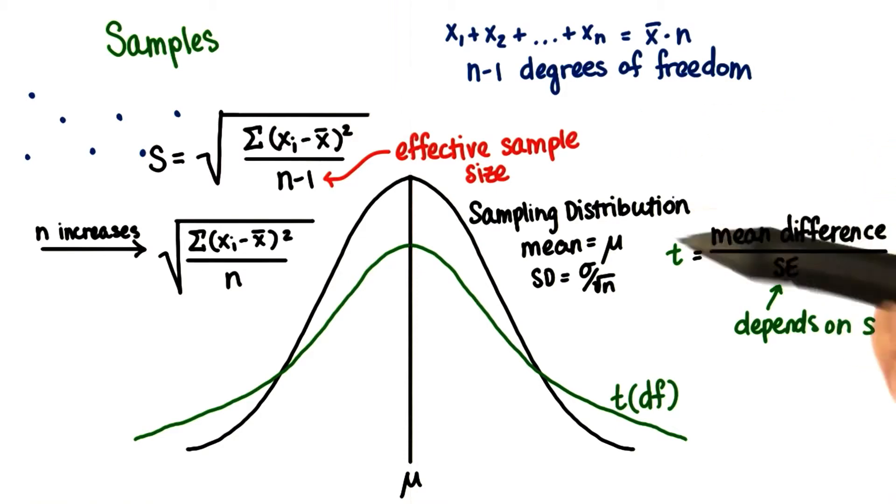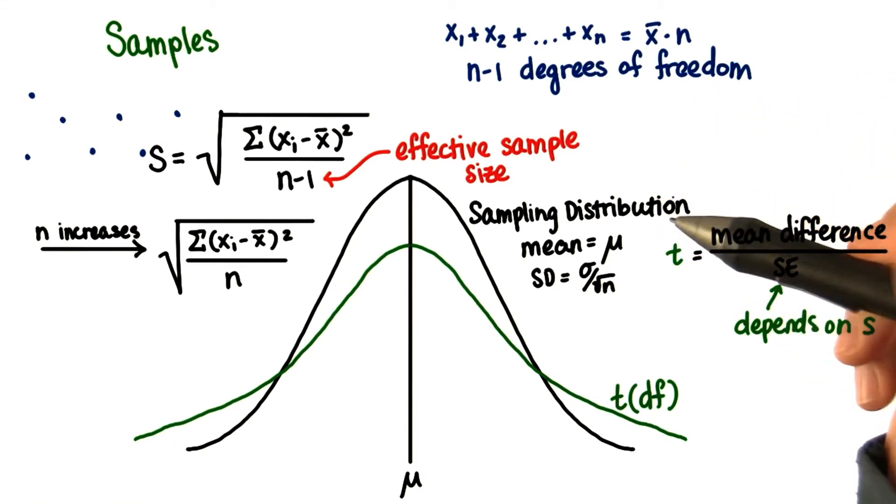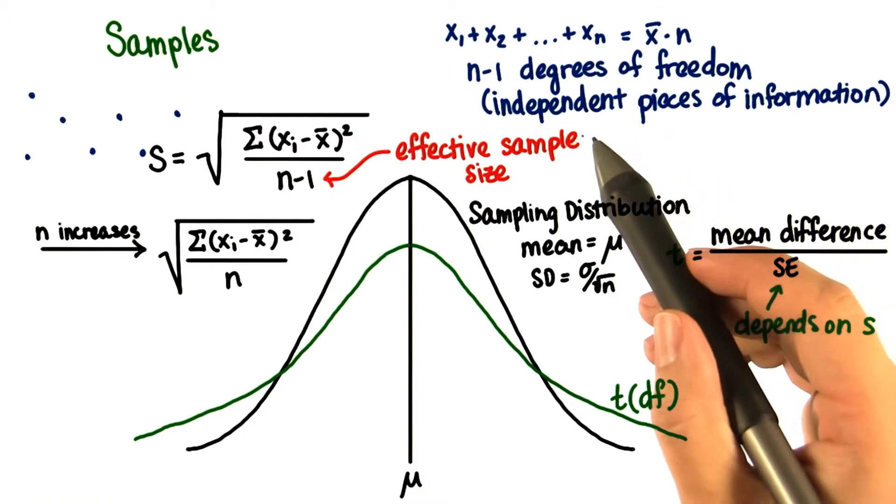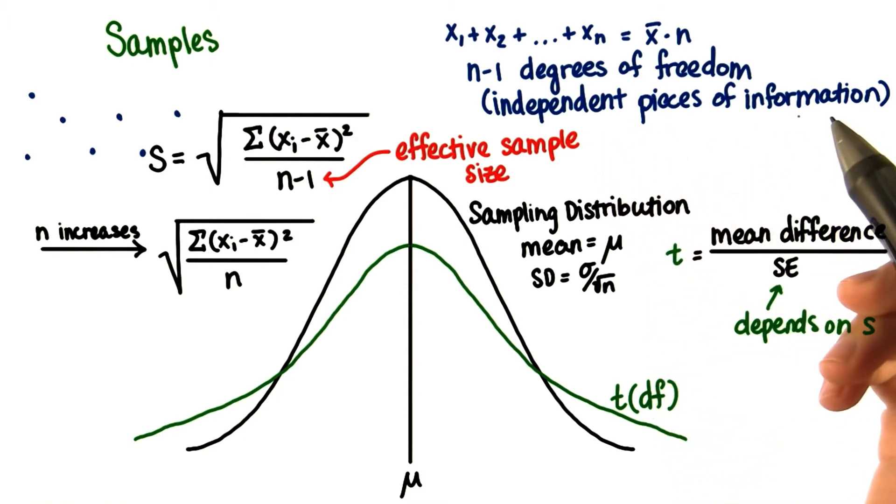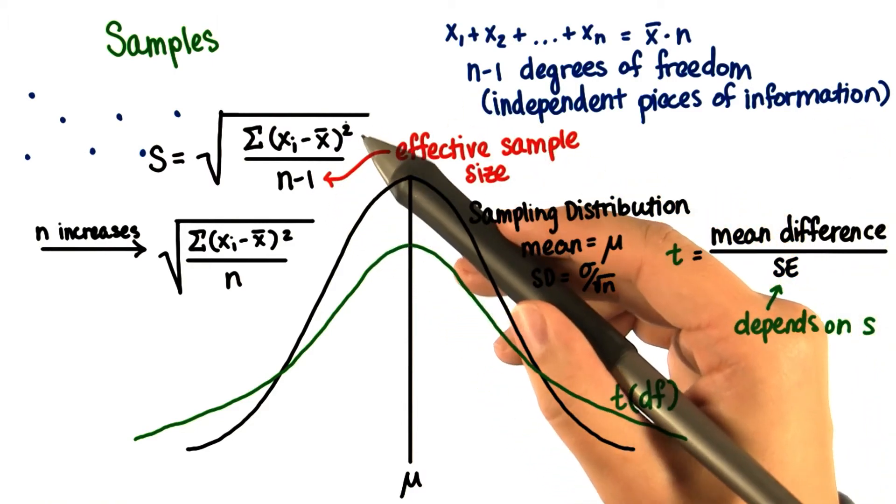Degrees of freedom are the number of pieces of information that can be freely varied without violating any given restrictions. Think of degrees of freedom as the number of independent pieces of information available to estimate another piece of information. Only n minus 1 values are independent after we know the mean.